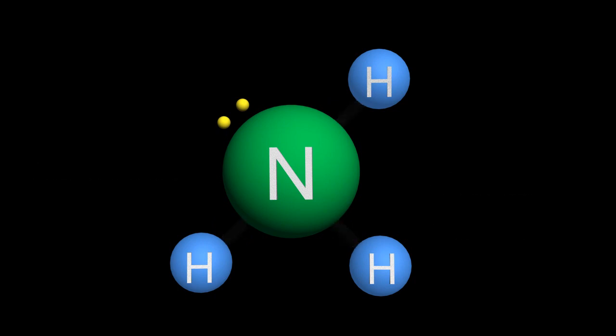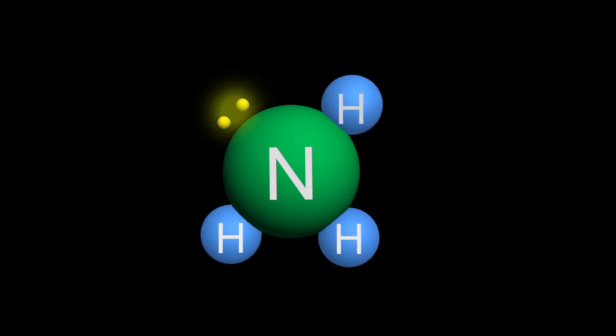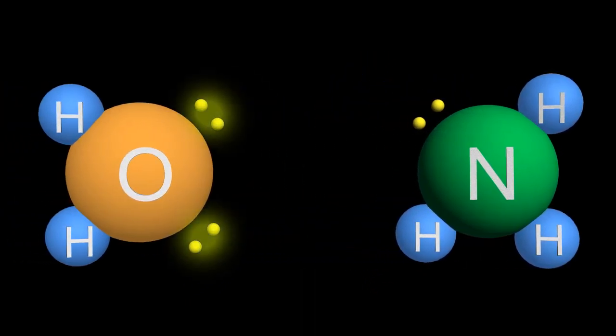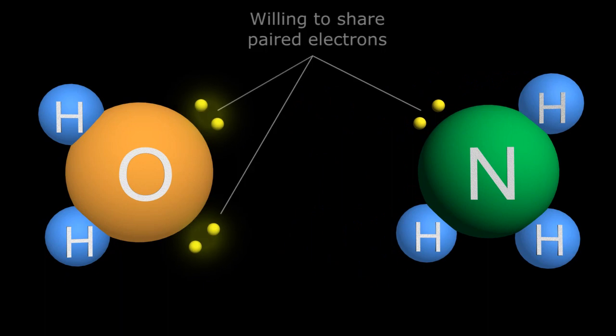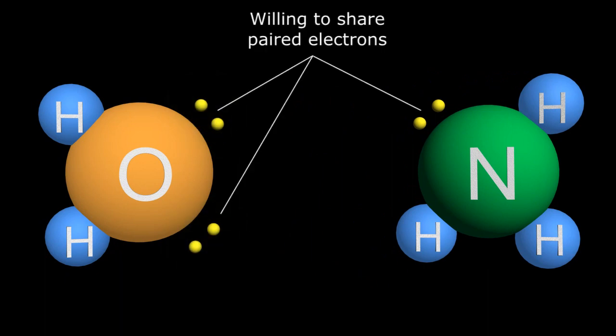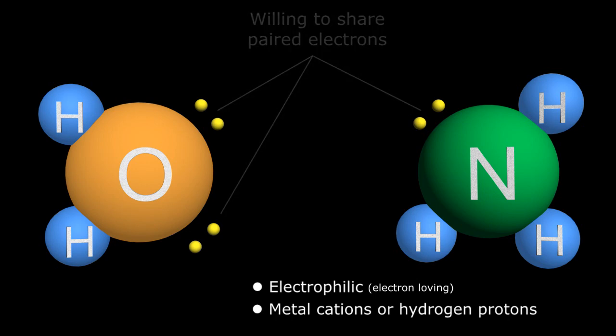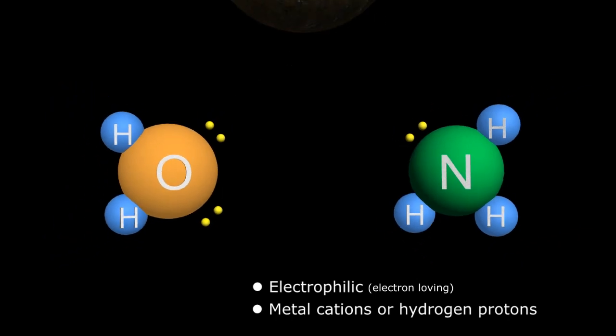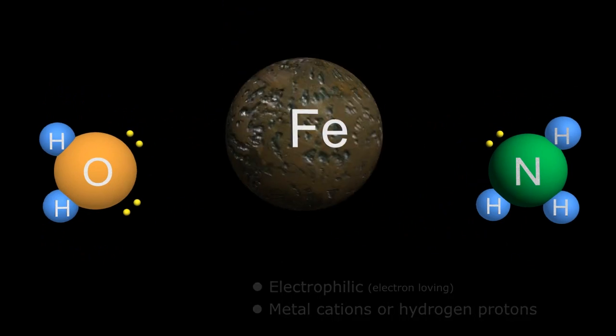However, elements like nitrogen with its single paired electrons and oxygen with its two groups of paired electrons can unselfishly share these paired orbital electrons with electrophilic atoms, such as metals or hydrogen atoms, that have lost or given up their own electron, becoming positively charged ions or cations.